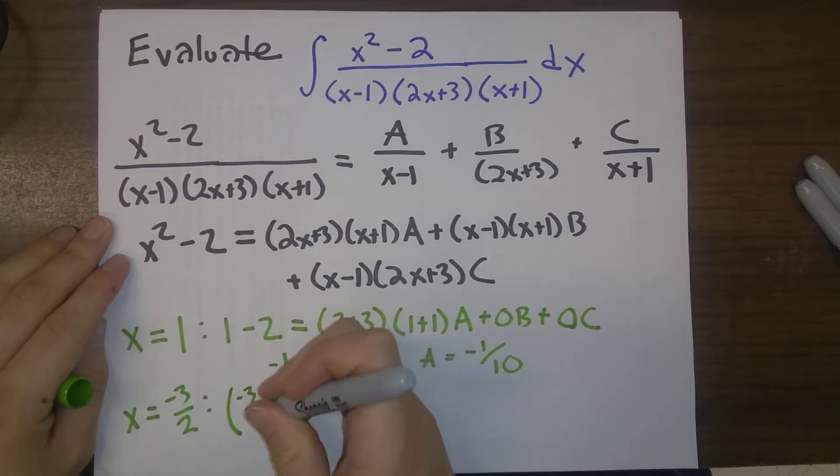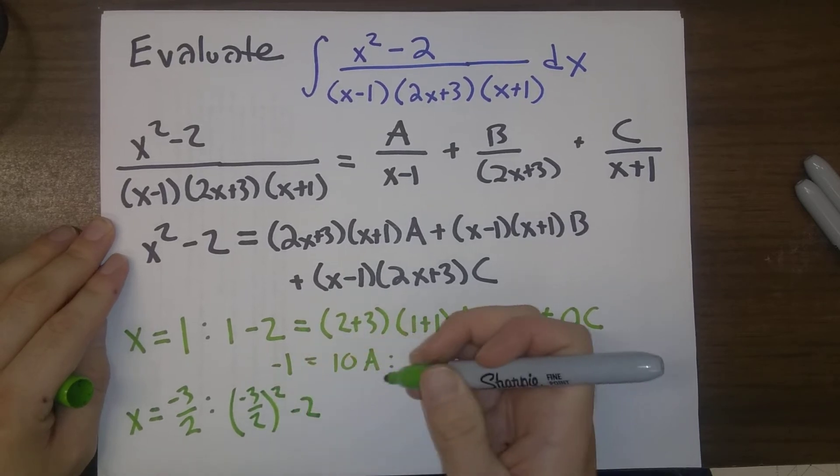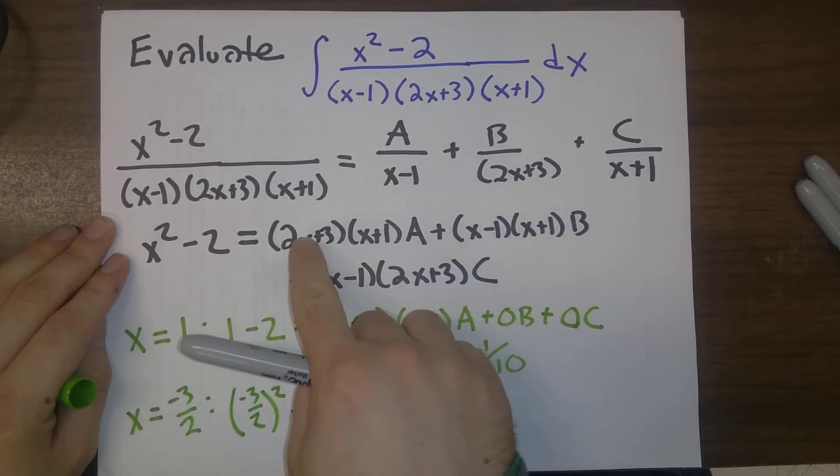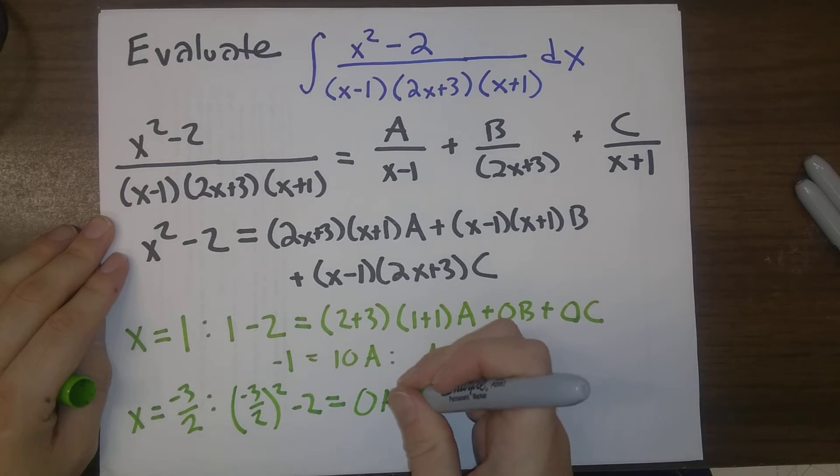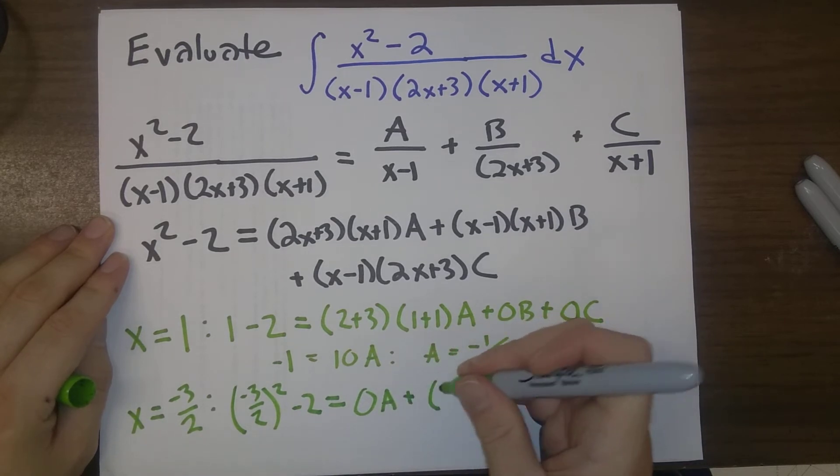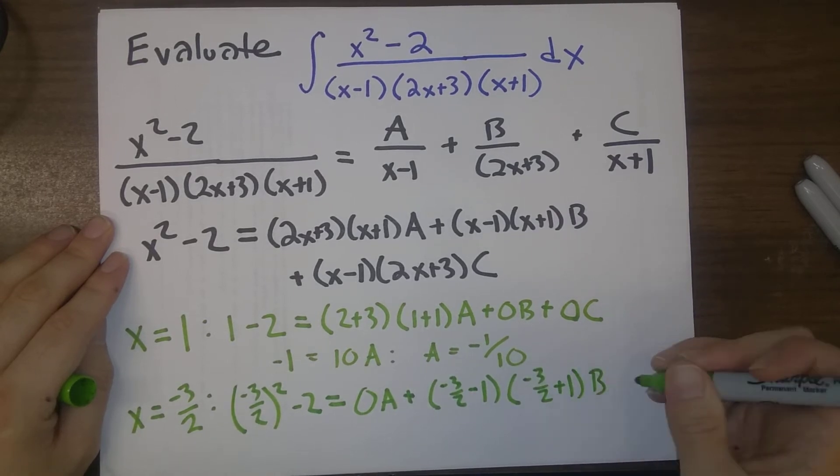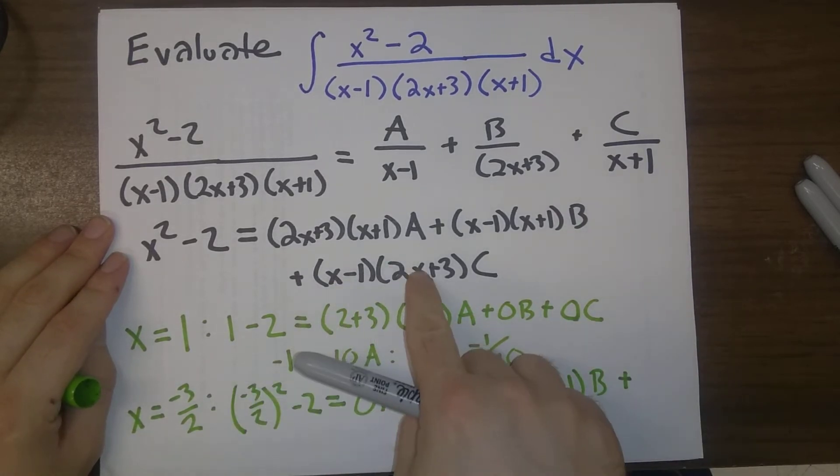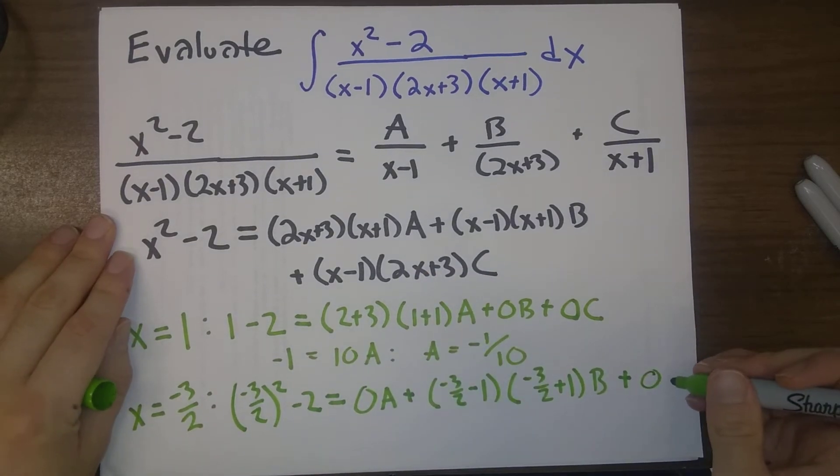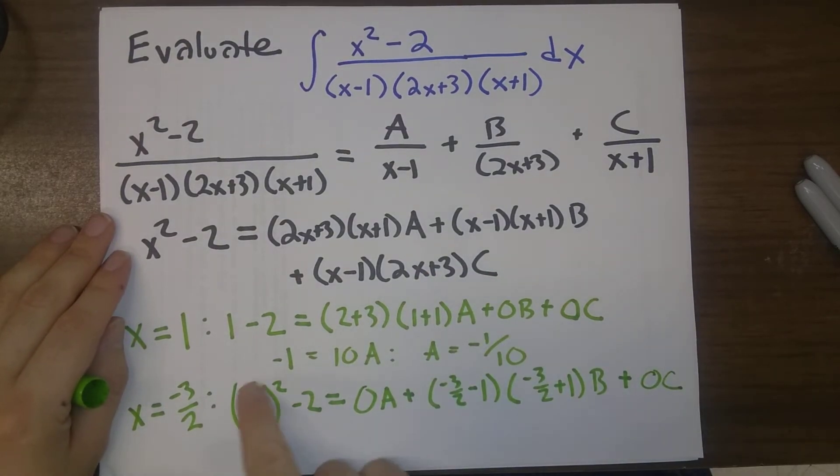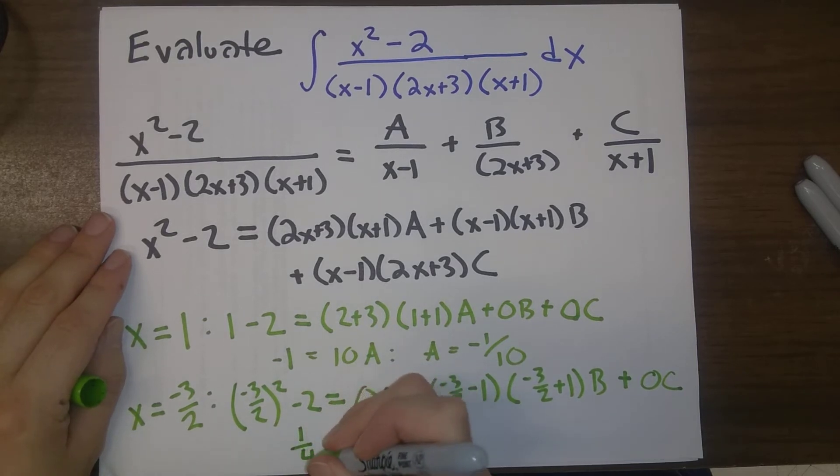So, minus 3 halves squared minus 2 is equal to 0 times A plus minus 3 halves minus 1 times minus 3 halves plus 1 times B plus 0 times C. So, the left here is plus 1 quarter.